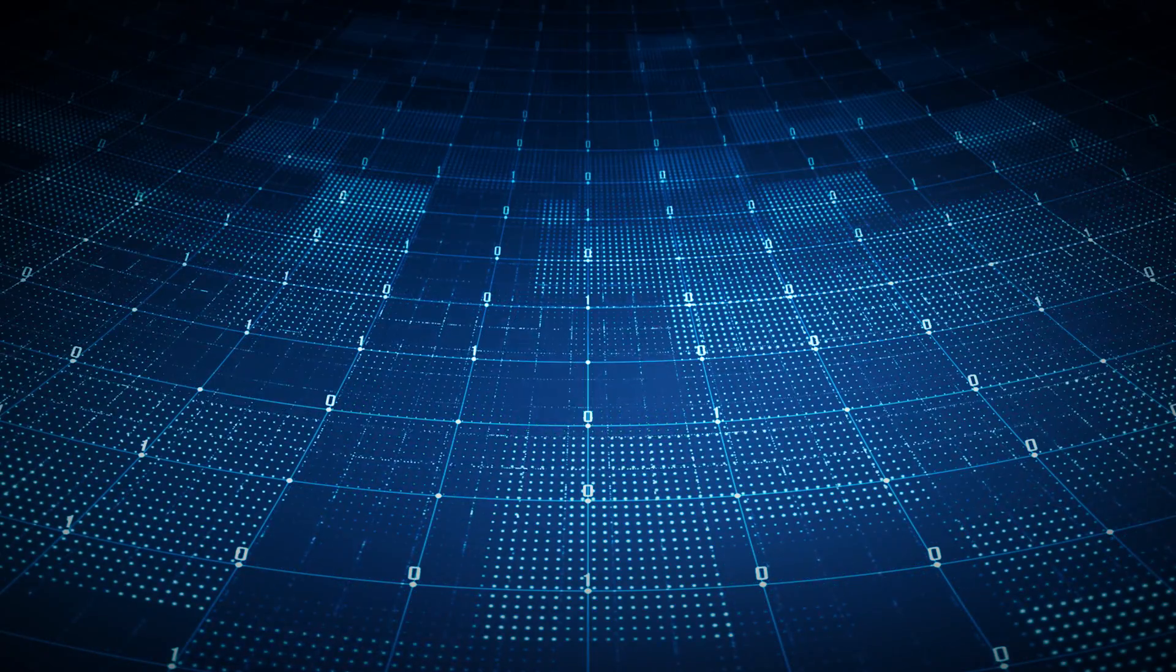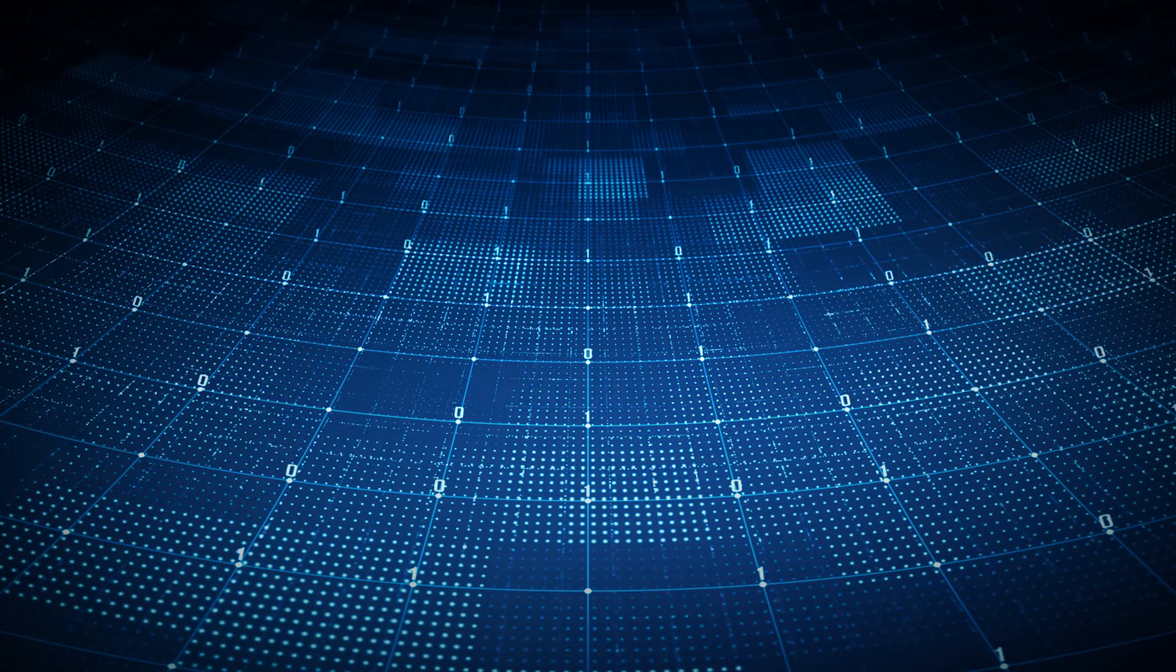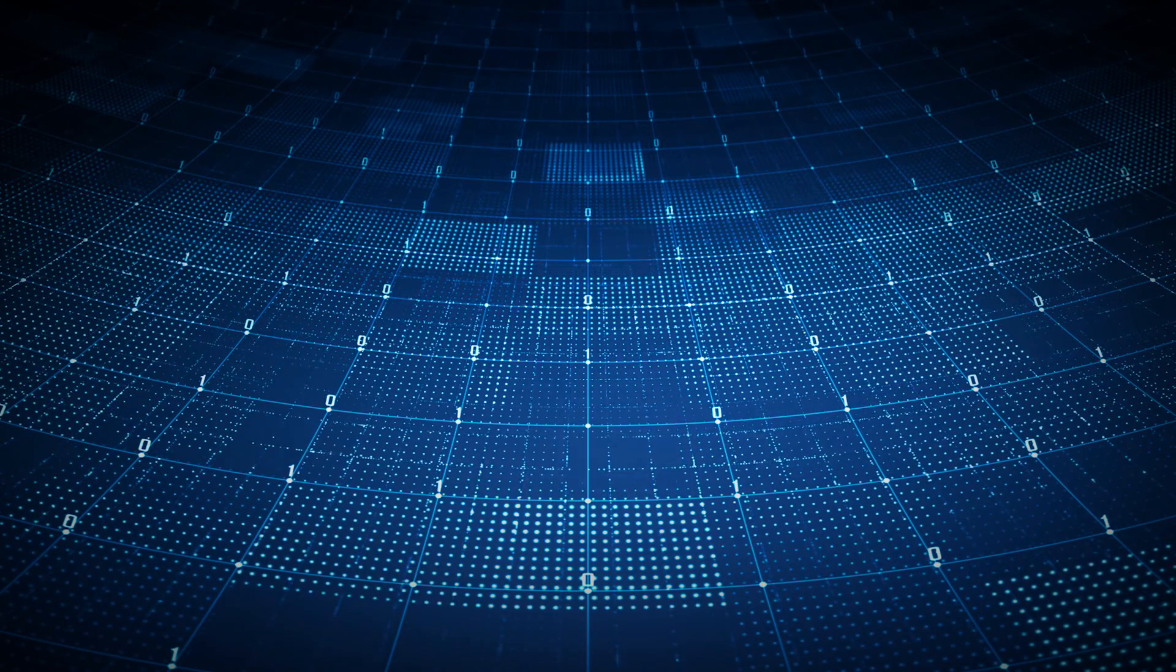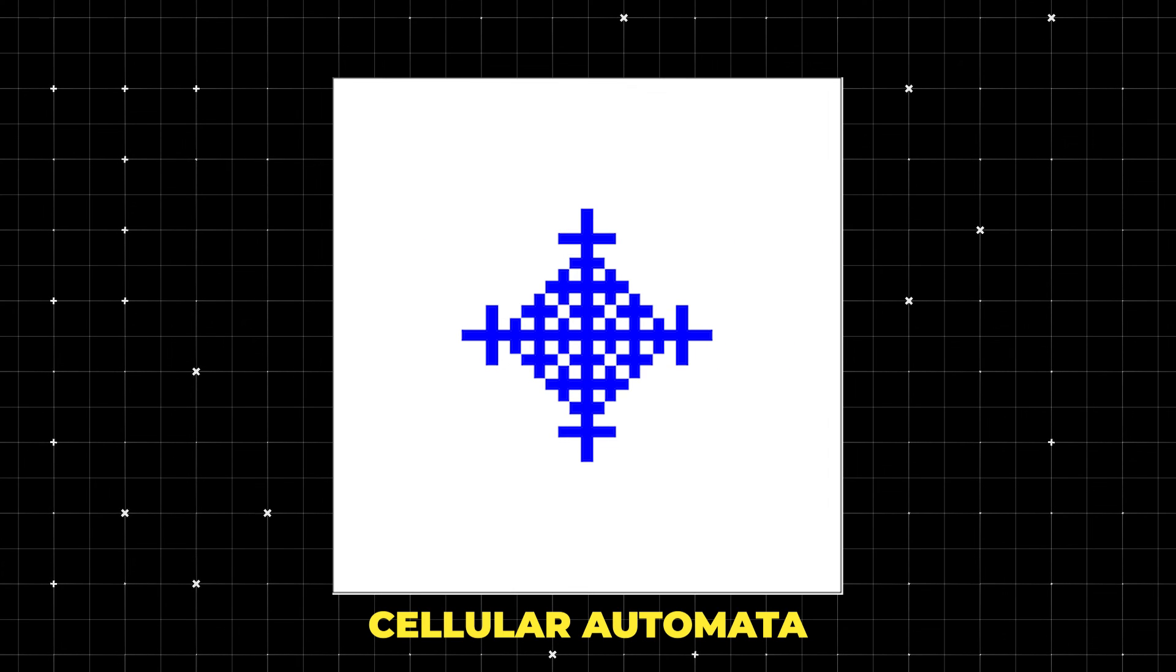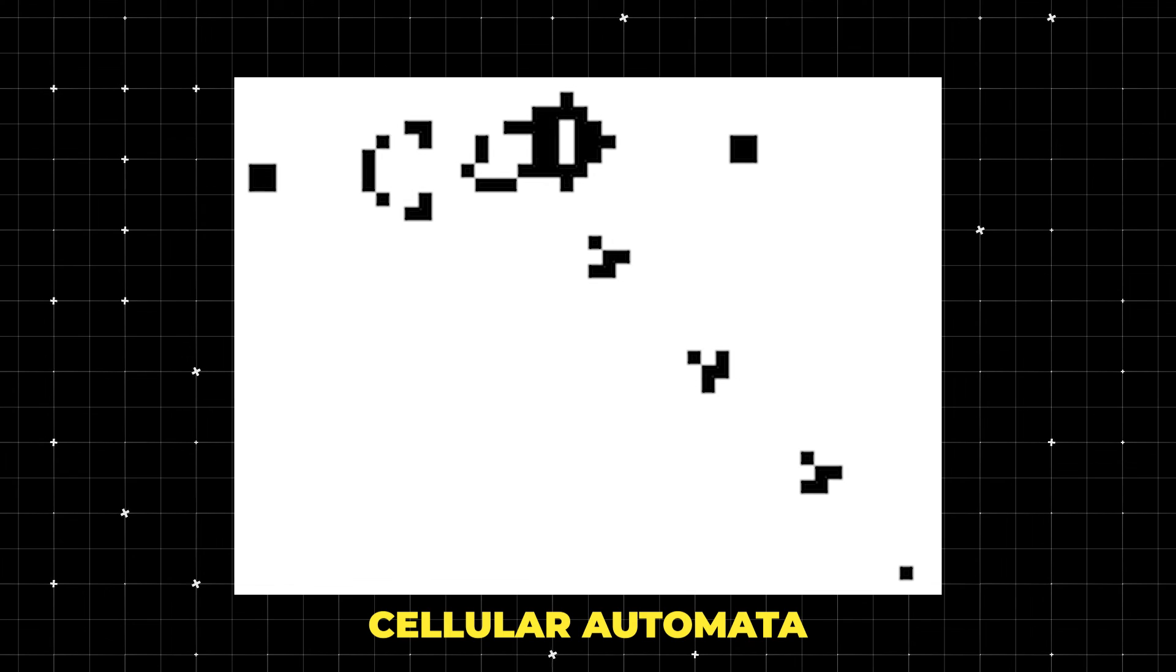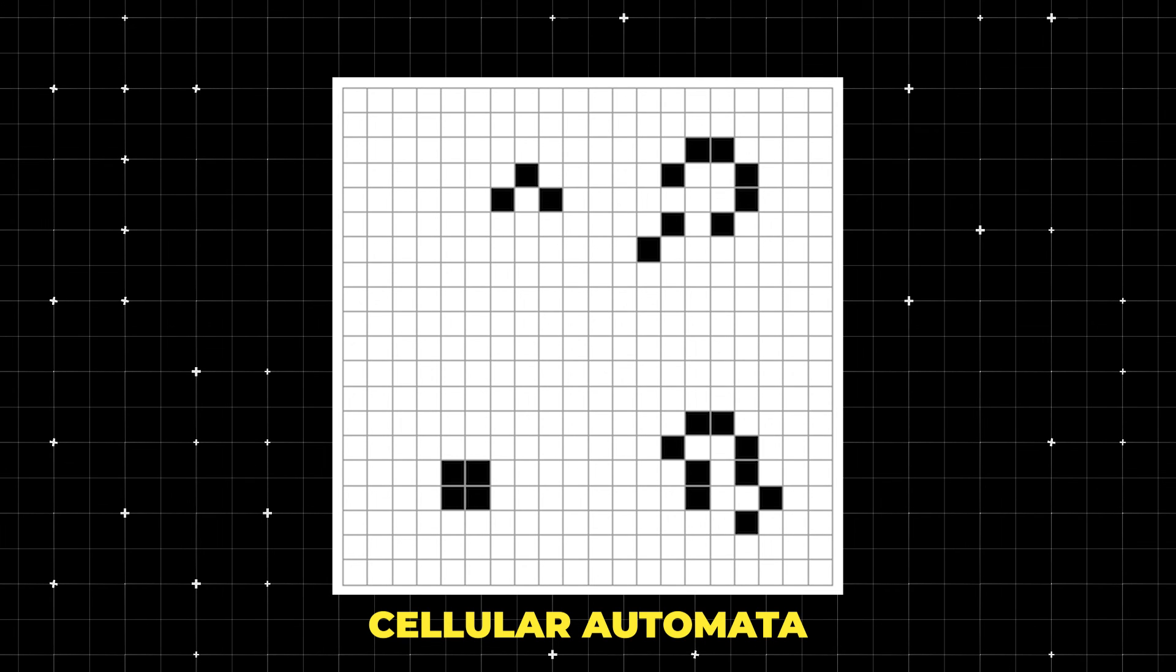Imagine a universe where each point in space and moment in time is a cell in a vast grid, each cell pulsating with bits of information, evolving, interacting, and weaving the cosmos as we know it. Cellular automata operate on this principle, wherein each cell evolves according to set rules, leading to an elaborate tapestry of complexity emerging from simple binary interactions.